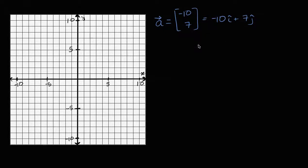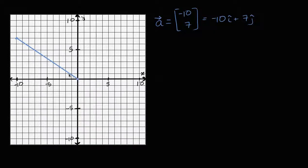Either way, we could draw this thing. We could pick an initial point, and if we say the initial point is the origin, what would this vector look like? The x component is negative 10, so it would go to negative 10, and then the y component is seven, so we'd go 10 to the left and then seven up. Seven up would get us to right over there, and the vector would look like this. It would start at the origin, with its terminal point at x equals negative 10 and y equals seven. So this is one way to represent vector a.